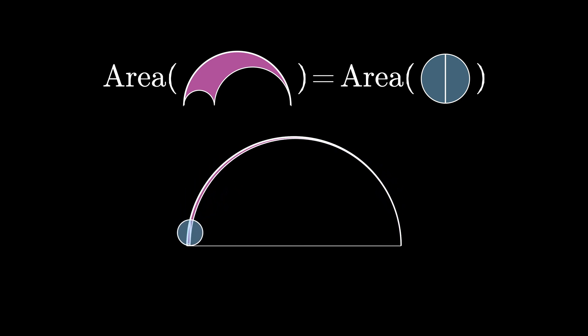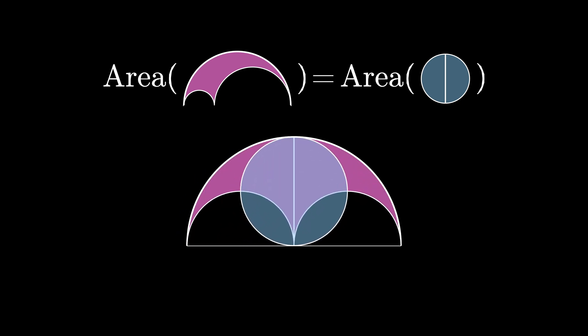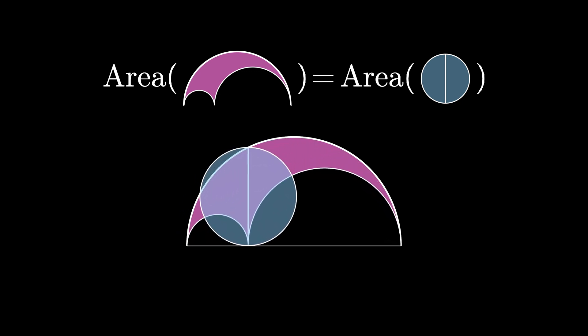No matter how we drew this diagram Thales triangle theorem would hold for the semicord in question and so the area of the arbelos is always equal to the area of the related circle.